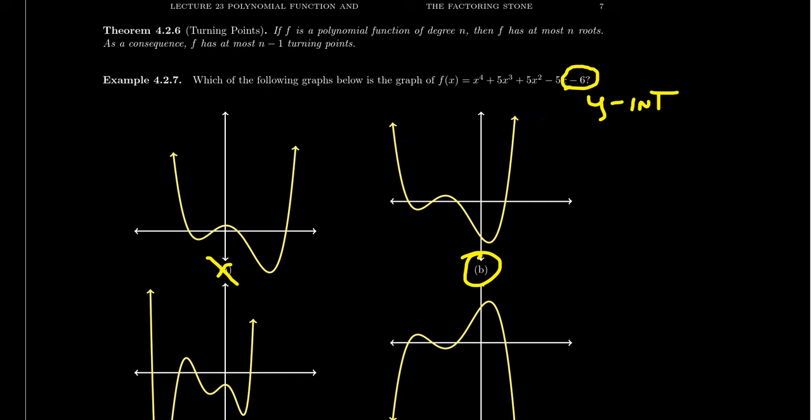And so therefore, our winner of today's game, Who is My Graph, is going to be graph B. And so our function and graph are going to go on a very romantic day to the most romantic restaurant in town, and we'll let them go have their time together.